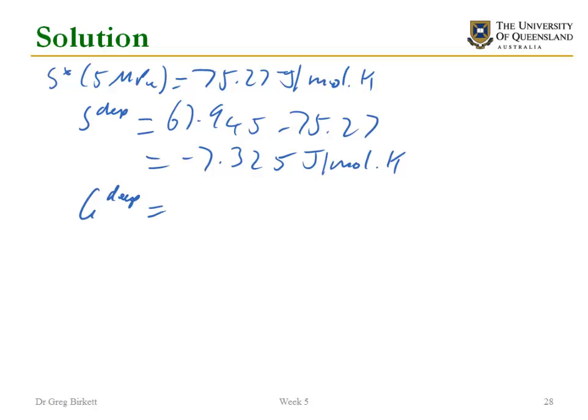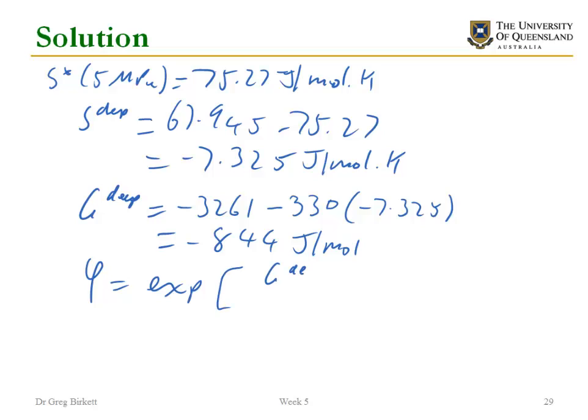So Gibbs departure is given by substituting in those values. Then I get a Gibbs free energy departure of negative 844 joules per mole. Substituting that into my equation for the fugacity coefficient, the exponential of negative 844 divided by RT, which is equal to 0.74.